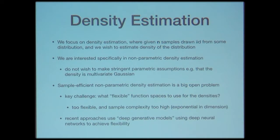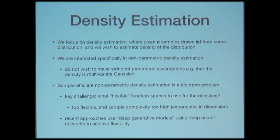For parametric families, the sample complexity scales linearly with the number of parameters. But in the flexible function spaces that non-parametric density estimation requires, the number of samples typically scales exponentially in the dimension. Even in our big data era, nobody will give us exponentially many samples. So we are stuck: non-parametric function spaces are too flexible, while parametric families are too stringent — we really need something in the middle.